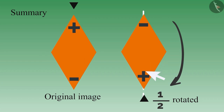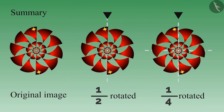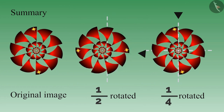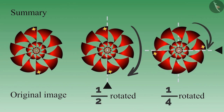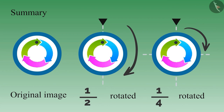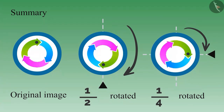In this video we learned that we should pay attention to even the small symbols marked on the image when rotating them by half or one quarter. It is not necessary that if an image looks like the original when turned by half, it will also look like the original when turned by one quarter. You also learned that it is not at all necessary that we get the original image by turning the image by half or one quarter. Hope you will take care of the important things mentioned in this video. Thank you.